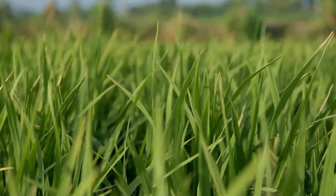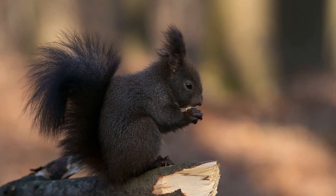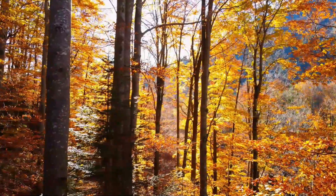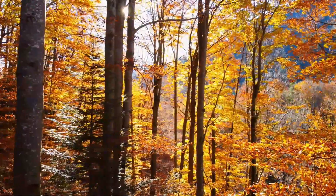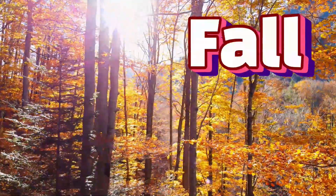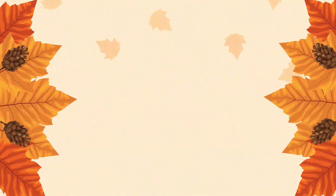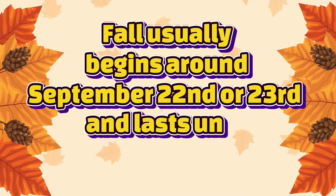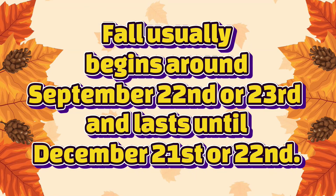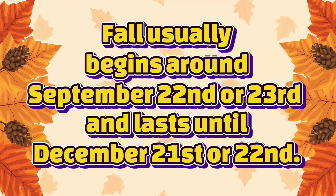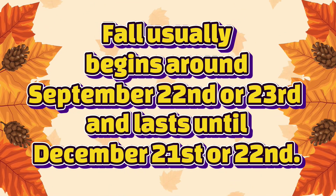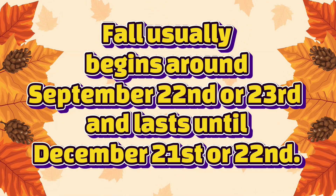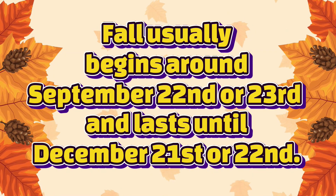As the days go by, things start to change. The air feels a little cooler, the days get shorter, and the leaves on the trees start to turn beautiful colors. That's when we know it's the next season of the year — fall. Fall usually begins around September 22nd or 23rd and lasts until December 21st or 22nd. Fall goes on longer than most people think. Even though the weather starts to cool down and the leaves start to change early in the season, fall doesn't officially end until December 21st or 22nd.